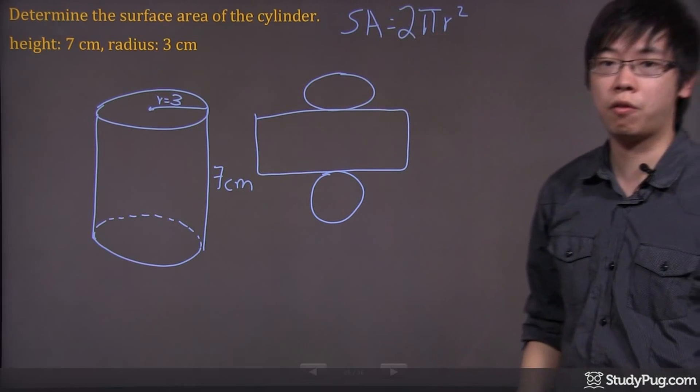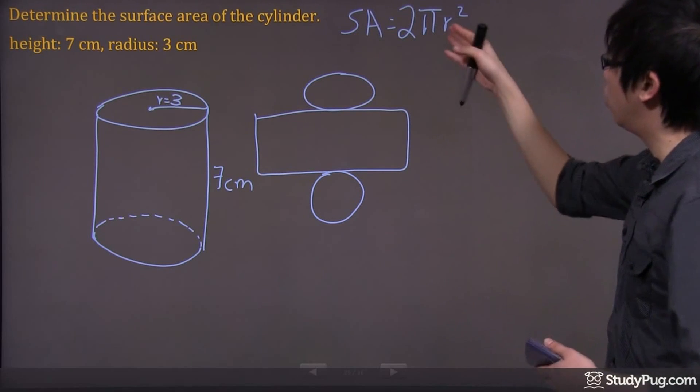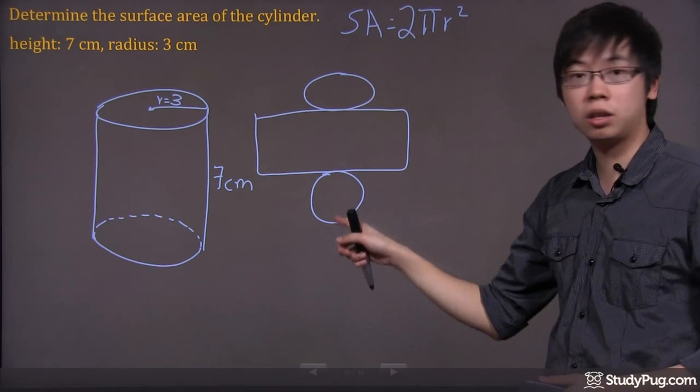You just need to put a 2 in the front. So, the 2 pi r squared will give you the area of the circles here and here.